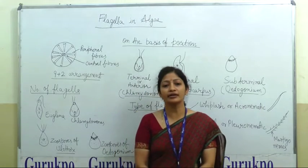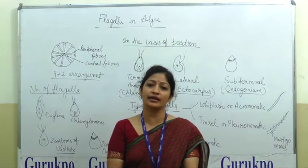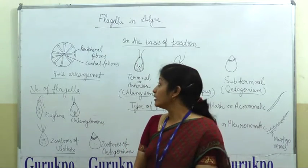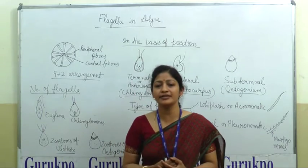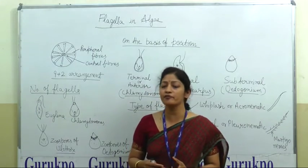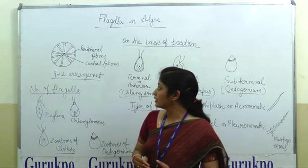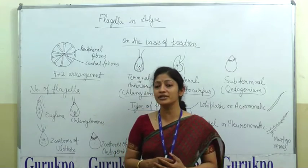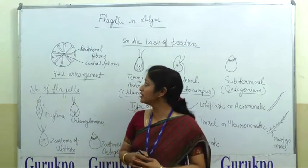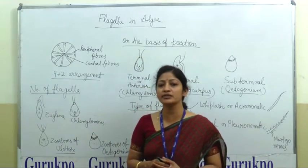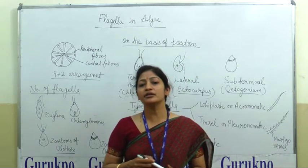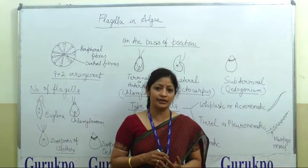Flagella is a long hair-like structure present in Algae and has the function of locomotion. If we cut the section of Flagella, it is made up of many micro-fibrils and these fibrils are made up of protein fibers. They show a 9+2 arrangement — 9 fibers are present at the periphery and 2 fibers are present in the center. Flagella is an important criteria we can use in the classification of Algae.